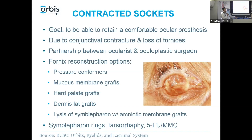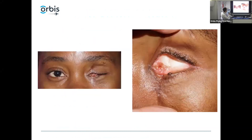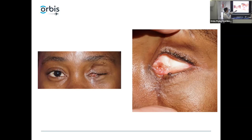Tomorrow we're going to do a mucous membrane graft. This patient had a laceration through the eyelid, and there's scarring in the inferior fornix making it very shallow, especially medially. She's unable to retain a prosthesis, so we're going to do a mucous membrane graft to deepen the fornix for her.